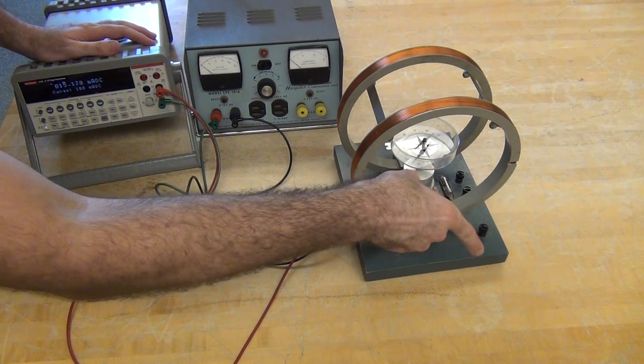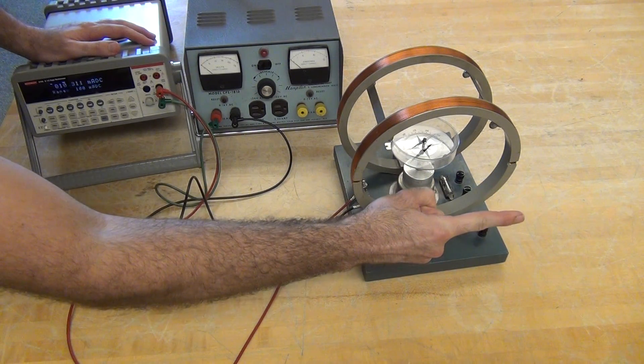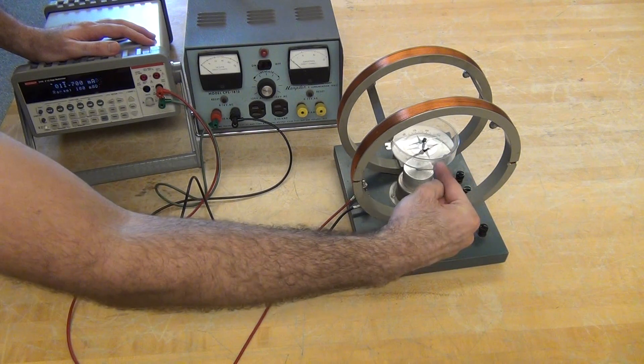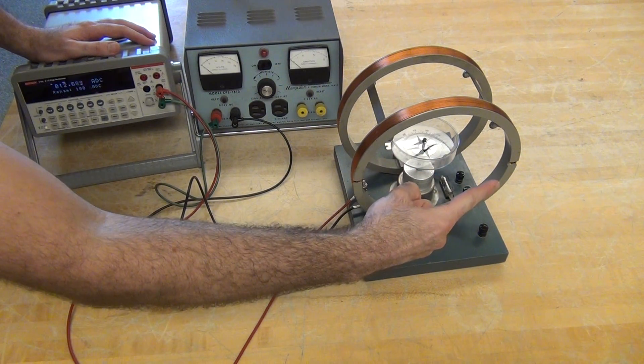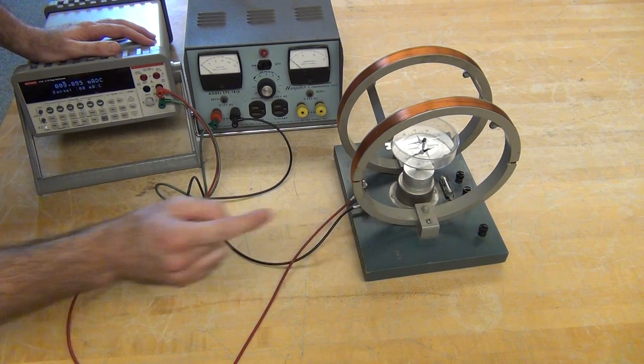Now the magnetic field of the Earth is pointing this way. The compass is only measuring this part, and the coil is creating magnetic field this direction. So those two together result in the compass measuring a magnetic field of that direction.